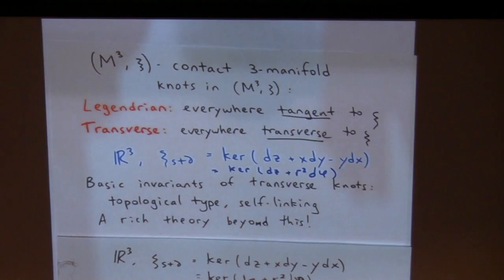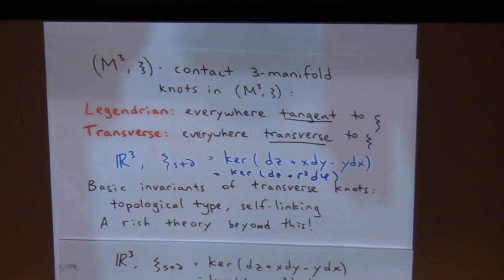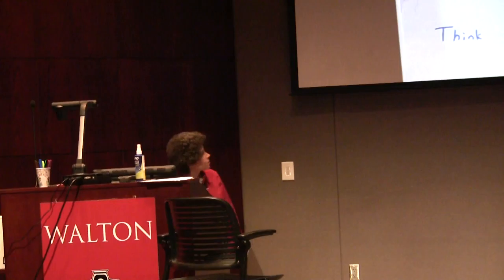Let's start just to set up what we are doing. We are looking at transverse knots in contact manifolds. Everything we are doing will be happening in R3 in the standard contact structure — the rotationally symmetric contact structure where the contact planes are horizontal along the z-axis, and then they rotate out as you go out in the radial directions.